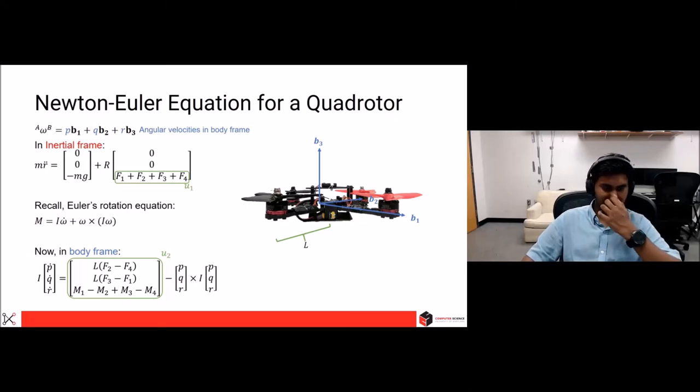And note that the matrix here, which involves L, F, and M, is totally denoted as U2. And also note that U1 was in inertial frame, U2 is in body frame. That's clearly written here. U1 and U2 will be basically the two inputs which we will be controlling to make quadrotor follow a trajectory or have a stable flight, and more about that in the oncoming lectures.